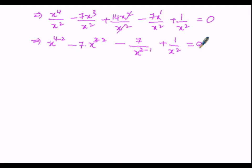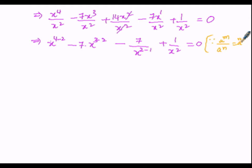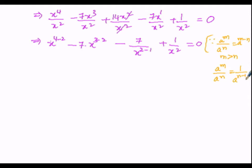We got this logical step by the formula. We have utilized two identities — the laws of indices. One: a power m divided by a power n equals a power m minus n, when m is greater than n. Two: a power m divided by a power n equals 1 divided by a power n minus m, when n is greater than m. We have utilized these two logical steps.